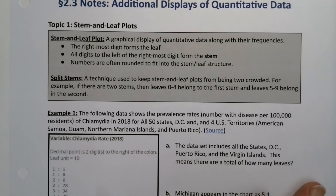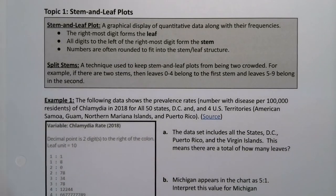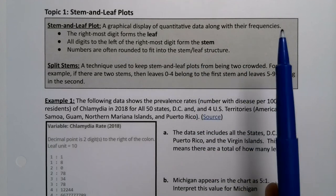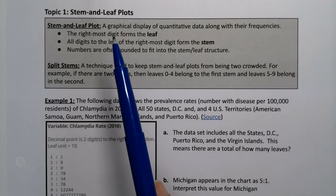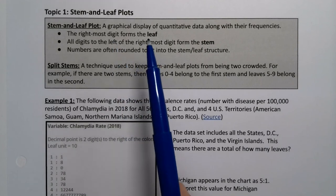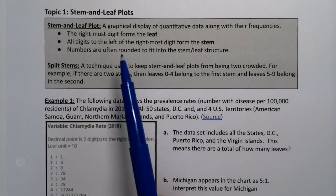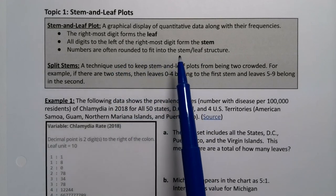The first type of graph we're going to look at is a stem-and-leaf plot. A stem-and-leaf plot is a graphical display of quantitative data along with their frequencies. The rightmost digit forms the leaf and all digits to the left of the rightmost digit form the stem. Numbers are often rounded to fit the stem-and-leaf structure.